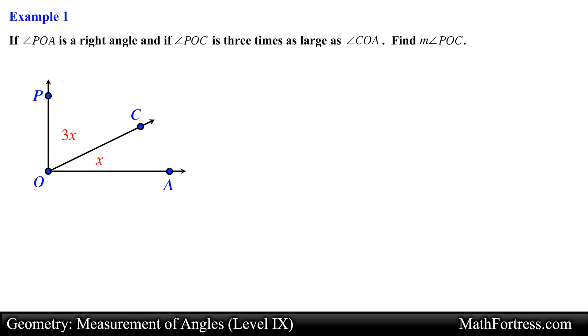From the diagram we know that the measure of angle POC plus the measure of angle COA is equal to the measure of angle POA. Using this geometric relation we can substitute the algebraic and numeric expression for the measurement of the angles.